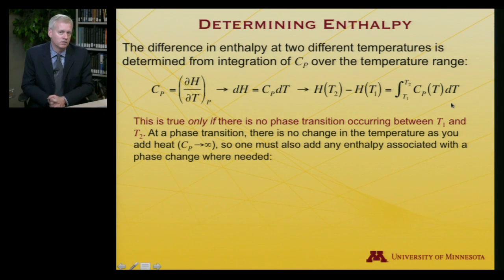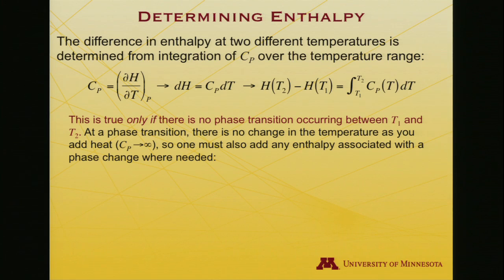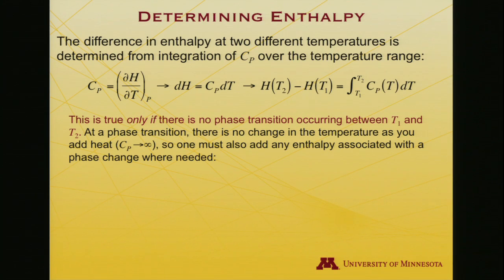It's important to mention this is only true if the phase of the system remains unchanged over that temperature range T1 to T2. At a phase change, such as ice melting or water boiling, additional heat — which is enthalpy at constant pressure — must be added to accomplish the phase change. At a phase change, the heat capacity becomes infinite because you're adding heat without changing the temperature, so the denominator is zero. You can measure heat capacity over the range of a pure phase, and then measure the phase change separately.